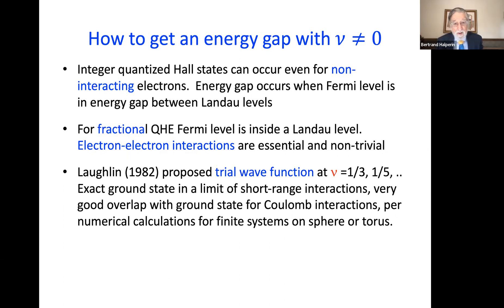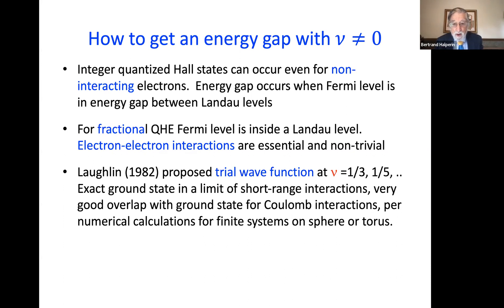The big breakthrough was Laughlin in 1982, who proposed trial wave functions for the simplest rational fractions, nu equals one-third and one-fifth. The trial wave function he proposed is actually the exact ground state in the limit of short-range interactions, and it turns out it has very good overlap with the ground state when you have Coulomb interactions between the electrons, as shown by numerical calculations carried out on finite systems containing up to 18 electrons on either a sphere or a torus. We have really great confidence that this is the correct explanation for those states.